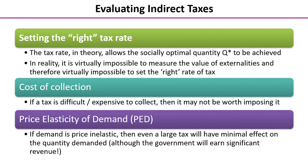Finally, thinking about PED — price elasticity of demand. When you have fairly price inelastic demand, think about examples like petrol, cigarettes, and alcohol — they do tend to have fairly price inelastic demand. So even a very large tax will actually have minimal effect on the quantity demanded. You could be cynical and say that doesn't really matter, because what the government wants is high tax revenue, which they will certainly get unless behaviours change.